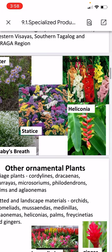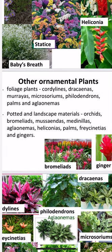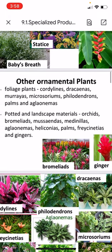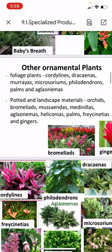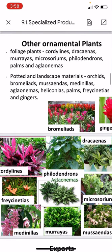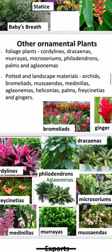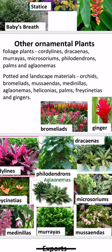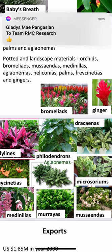Other ornamental plants include foliage plants such as cordylines, dracaenas, marayas, microsporums, philodendrons, palms, and aglaonemas. Potted and landscape materials include orchids, bromeliads, monsteras, medallions, aglaonemas, heliconias, palms, and ferns.